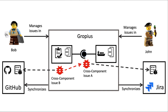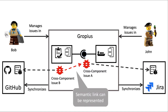To summarize, Bob and John can manage their cross-component issues with Gropius in a simple graphical notation. It allows them to visualize dependencies between multiple components and issues directly, instead of only having a textual relation. Gropius synchronizes every action they perform to the underlying issue management systems and backwards.